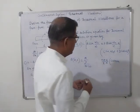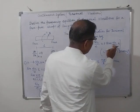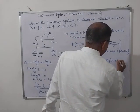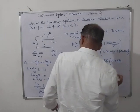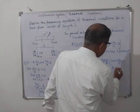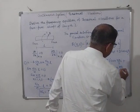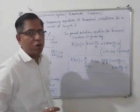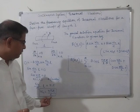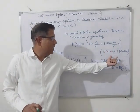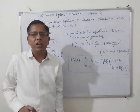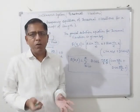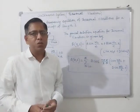Substituting ωₙ = nπc/l, the c's cancel, and the general solution becomes: θ(x, t) = Σ (n=1 to ∞) B cos(nπx/l) · (C sin(nπct/l) + D cos(nπct/l)). This is the general solution for torsional vibration of the free-free shaft. We have obtained the frequency equation and the general solution equation for the torsional case.